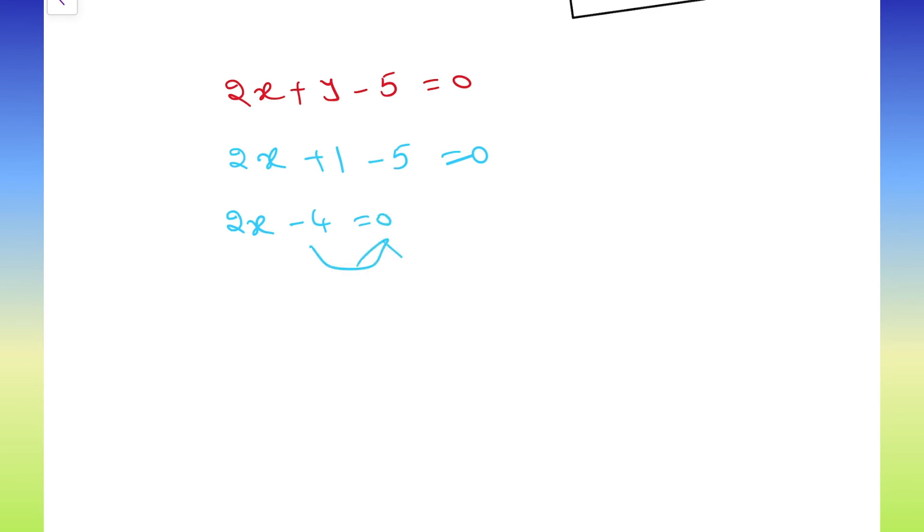Taking minus 4 to the right side. 2x is equals to 4. Take 2 also right side. Then, x is equals to 4 by 2. 2 ones are 2 twos are x is equals to 2.